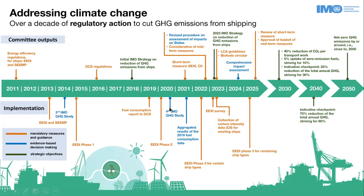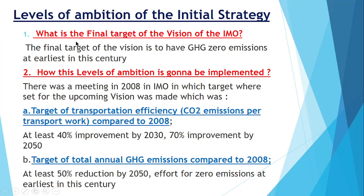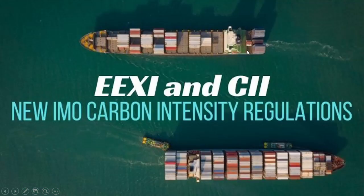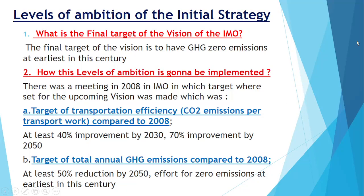What are the basic aims of this IMO strategy? We will understand by this graph. As you can see, the whole thing — EEDI, EEXI, SEEMP part 1, part 2, CII — everything has come up because of greenhouse gas emissions. The main aim of IMO is to reduce greenhouse gas, and they have put certain targets. The final target of the IMO vision is to have zero greenhouse gas emissions, meaning they want to transition ships to fuels with zero carbon emissions. We are now in a phase where we are moving away from fossil fuels to fuels with zero carbon emissions. That is the IMO final target.